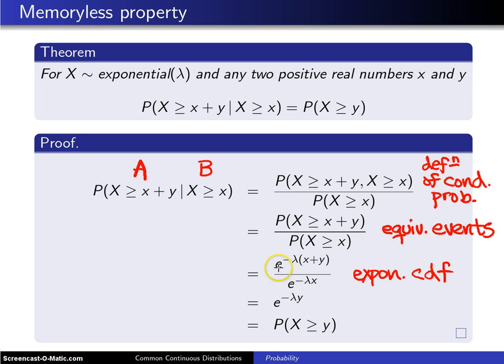And if you take the numerator and write it as e to the minus λx times e to the minus λy, the e to the minus λx is canceled, so that's a little bit of algebra here, and you get e to the minus λy.